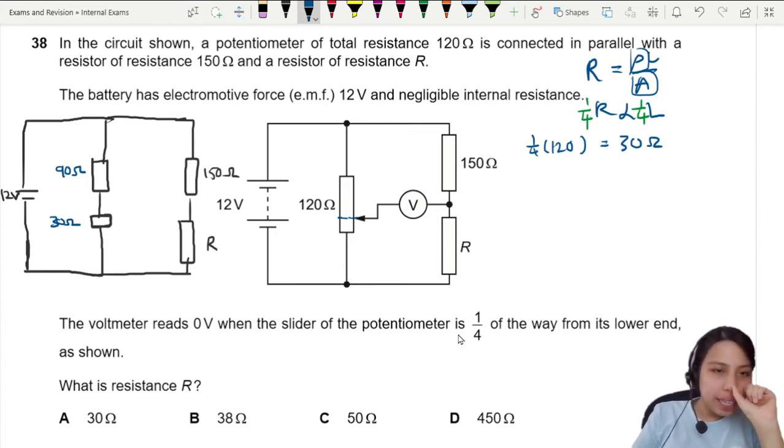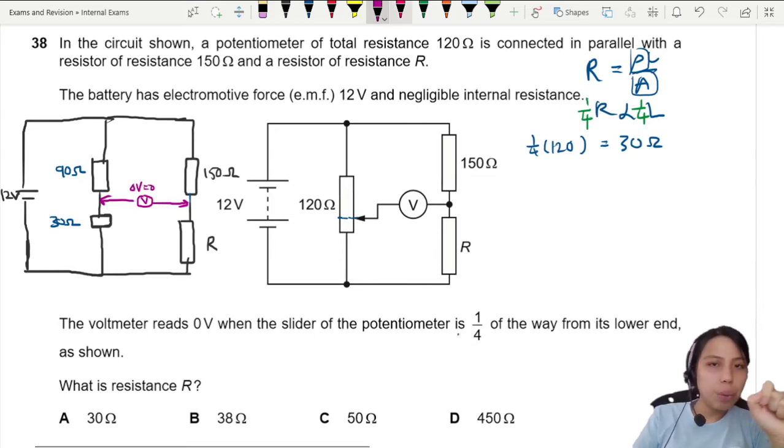Now we have everything we need except one point: the voltmeter. The voltmeter is actually an important clue. It's saying if I connect the voltmeter between here and here, the difference is actually zero, which means the potential on the right side at this point is exactly the same as the potential on the left side at this point.